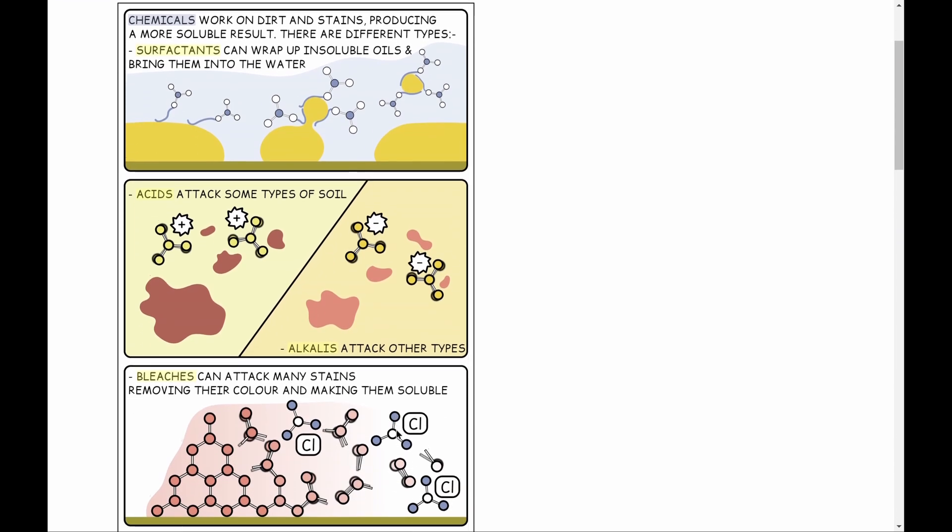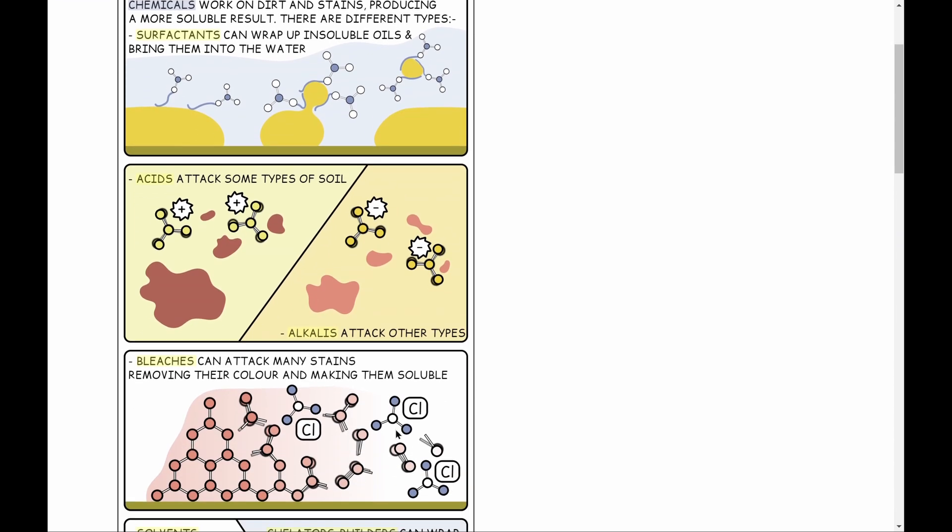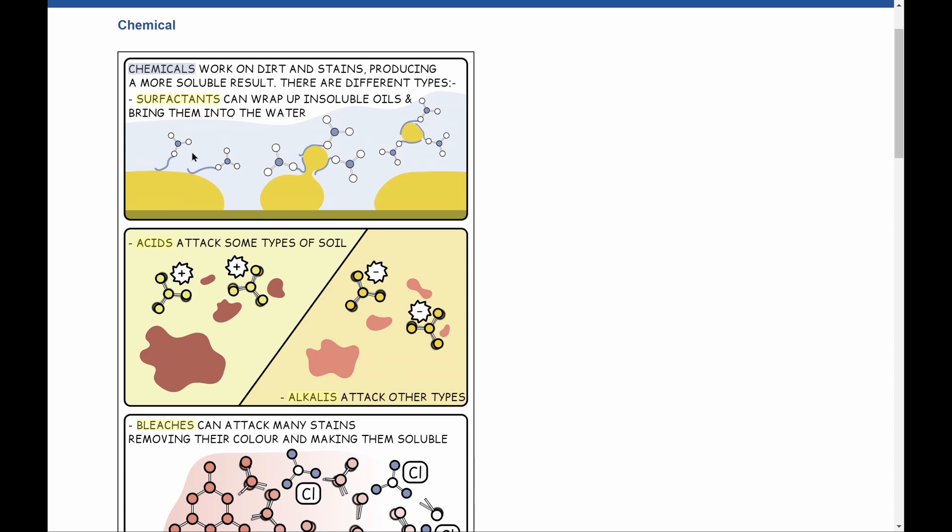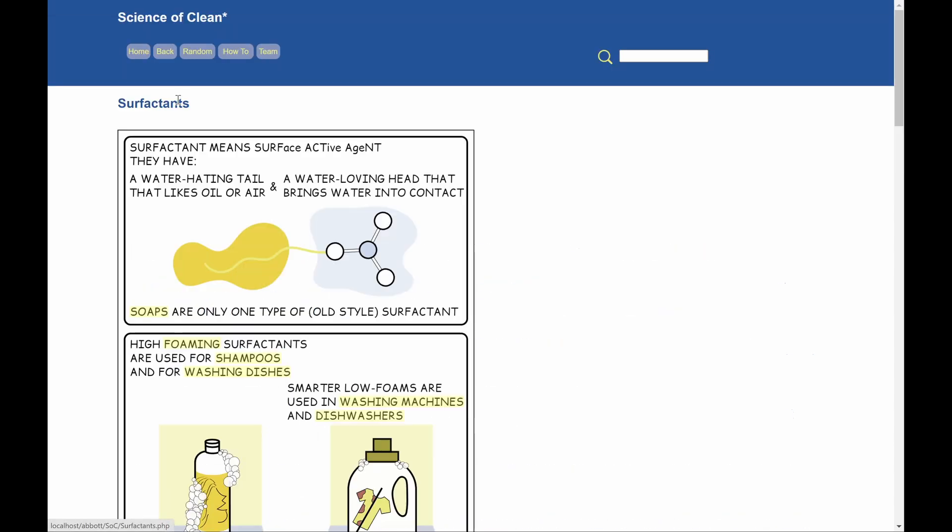Bleaches are also harsh, but they're harsh for a good reason. And so forth. Let's go to surfactants. A surfactant means a surface active agent. And they have a water-hating tail that likes oil. So the oils grab onto the tail and the water-loving head goes into the water. So the water-loving head drags the oil into the water.